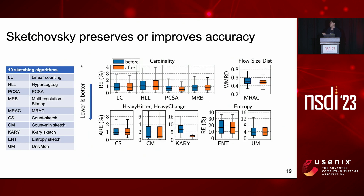For the accuracy evaluation, we used 10 different sketching algorithms and created four different ensembles, running them on the Tofino switch using the CAIDA packet trace. The X axis shows sketch instances configured with different sketching algorithms, and the Y axis shows the measurement error. SketchObski either preserves accuracy — with similar error across all measurements — or sometimes even improves accuracy, with error significantly reduced.